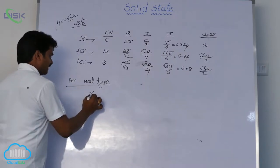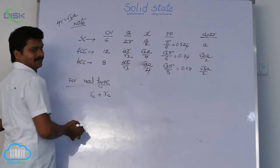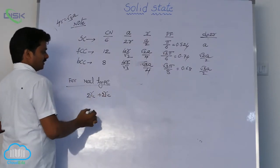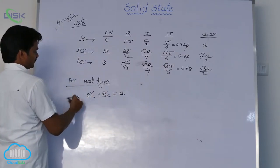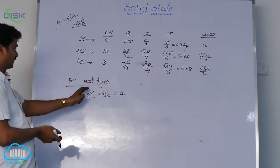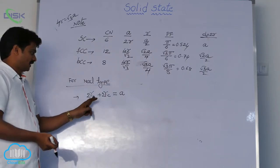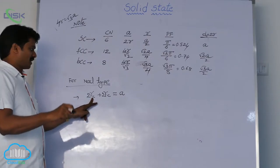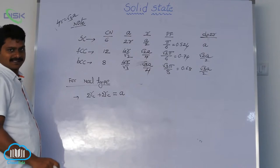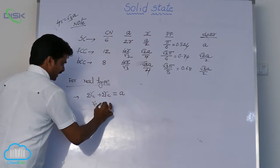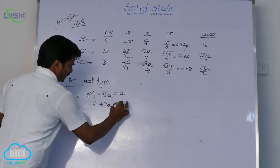See here, radius of cation plus radius of anion, 2 into radius of cation plus 2 into radius of anion is equal to edge length. For NaCl type structure, even though it is FCC, its formula to calculate edge length: 2 into radius of cation plus radius of anion. That means, radius of cation plus radius of anion is equal to a by 2.